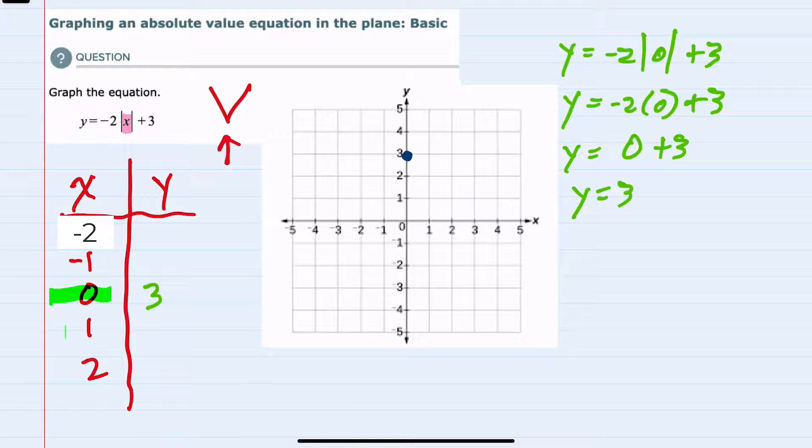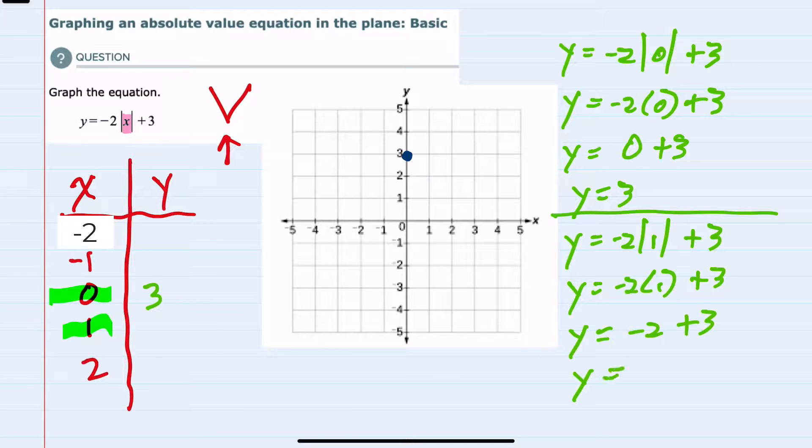Next I'll try 1. When we let x equal 1 and substitute into the equation, we have y equals negative 2 times the absolute value of 1 plus 3. The absolute value of 1 is 1. Moving to multiplication, negative 2 times 1 is negative 2, and then negative 2 plus 3 is 1. So we have the point (1, 1) which is here.